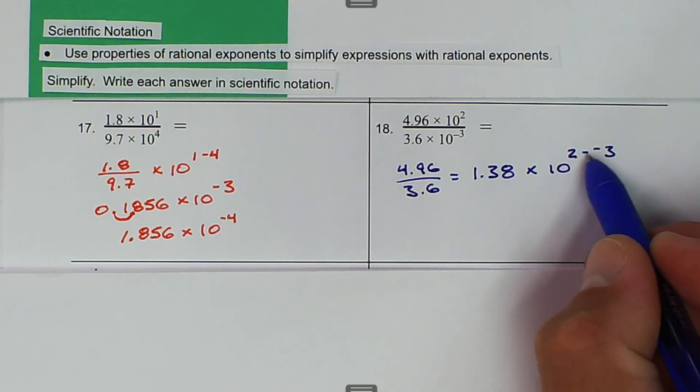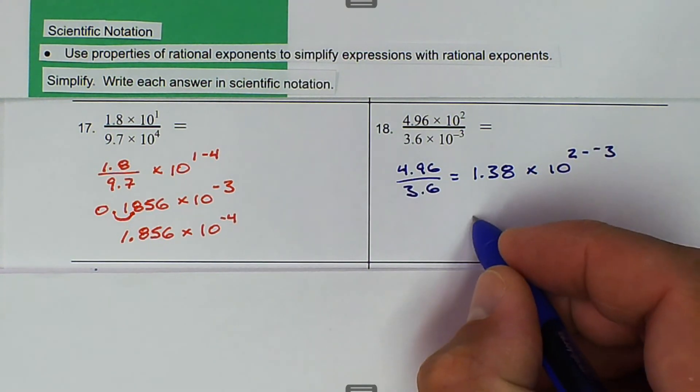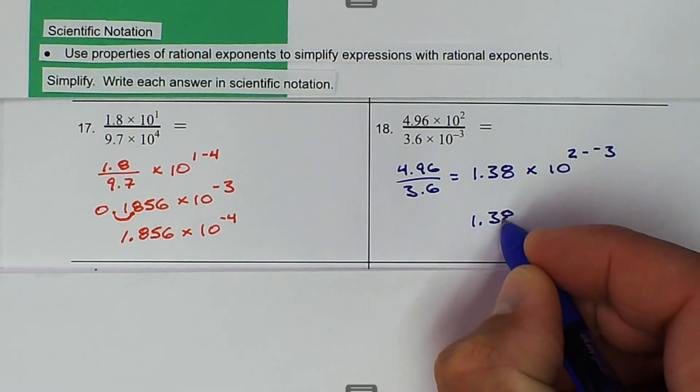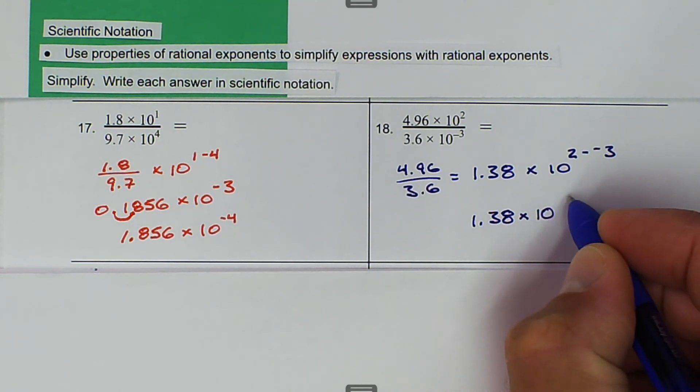When we subtract that, 2 minus a negative is actually addition, so we get 1.38 × 10^5.